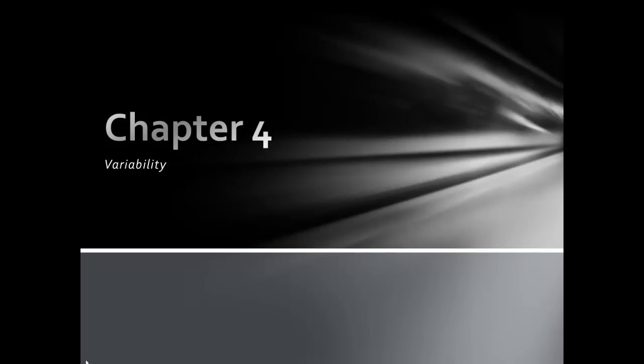Now we're moving on to variability. Variability is just a fancy word for the spread of scores, the dispersion of scores, or the differences among scores. First we'll look at picturing the variability — just showing you what the spread looks like in different types of data sets.